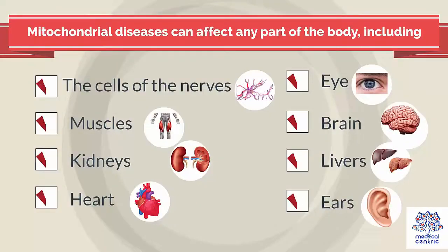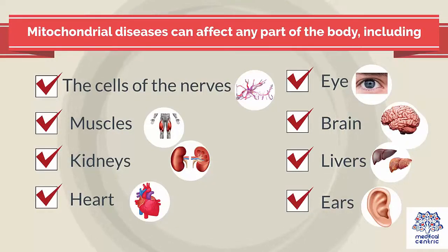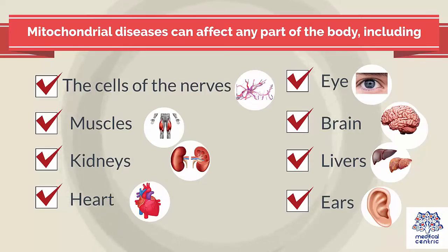Mitochondrial diseases can affect any part of the body, including the cells of the nerves, muscles, kidneys, heart, eye, brain, liver, and ears.